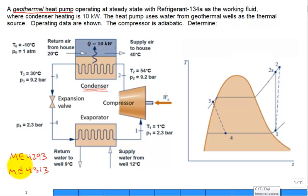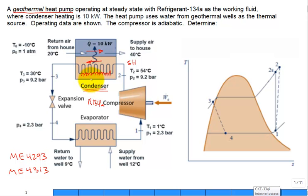When you have a heat exchanger that is counter-flow — so on one side fluid is flowing one way and the other side it's flowing the other way — and one of the fluids is undergoing a phase change. Here in the condenser, the refrigerant 134A enters as superheated. It spends quite a bit of time inside the condenser changing phase, going two-phase from saturated vapor to saturated liquid, and then it comes out as sub-cooled liquid.